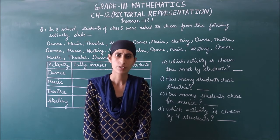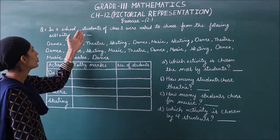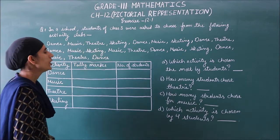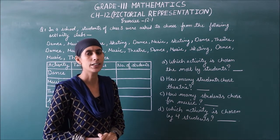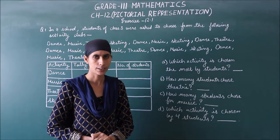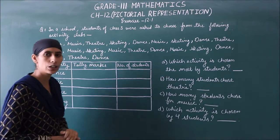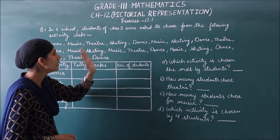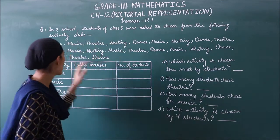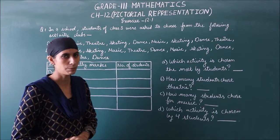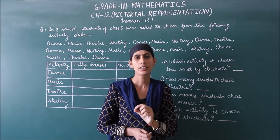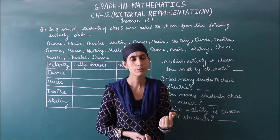Let's start. Question 1 is: in a school, students of Class 3 were asked to choose from the following activity clubs. About one school — students were asked to choose from the following activity clubs, so we have some activity clubs: dance, music, theater, and skating. The person who made a choice — we have collected that information and written it as data.